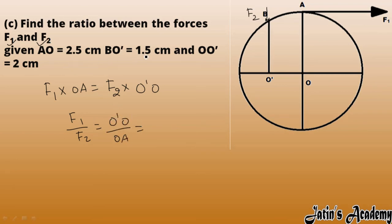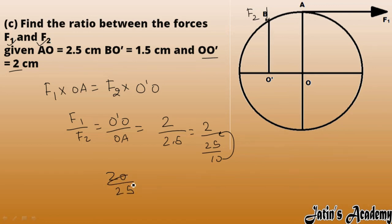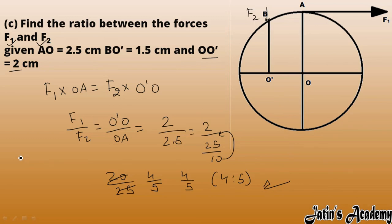OO' is given as 2 cm and OA (same as AO) is given as 2.5 cm. So F1 by F2 equals 2 over 2.5, which becomes 20 over 25, simplifying to 4 by 5. So the ratio F1 to F2 is 4:5. The book asks for F2 by F1, which is simply 5:4. You can find the ratio either way from the same calculation.